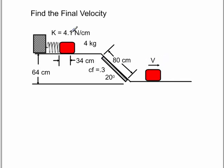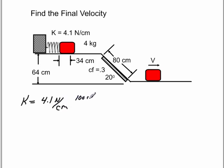To do a problem like this, if the spring constant is given in newtons per centimeter, go ahead and do the conversion now, because I caught myself making a mistake earlier. The K value here would be 4.1 newtons per centimeter. Go ahead and do the conversion — that would be 100 centimeters over 1 meter. The centimeters will cancel out, and that will give you a K value of 410 newtons per meter.